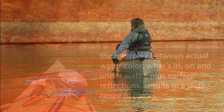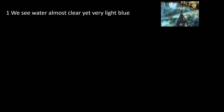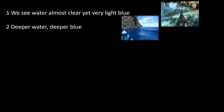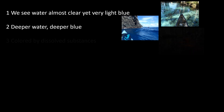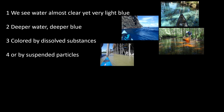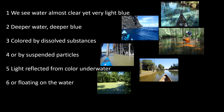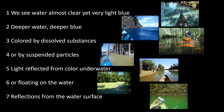The interplay between actual water colour and what is on top, in and beneath the water, plus the surface reflections, offers us a wide range of changing colours to see. For example, in the shallows we can find clean water that is almost clear or very light blue or blue-green. Deeper water appears darker blue. Sometimes there is colour from dissolved substances like tannin, or from plankton and other suspended particles. In shallows the colour of underwater objects shows through, but maybe there is something coloured covering the surface, or the clear surface reflects the colour of what lies above or beyond.